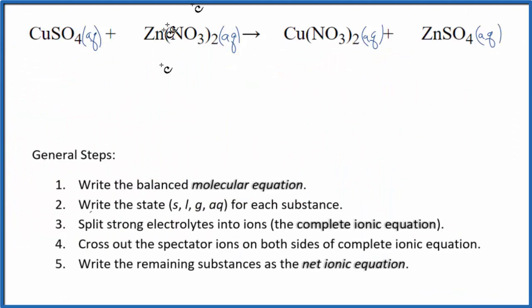So I can split this up into its ions. I'll have Cu, and that'll be copper 2+. I won't write the states in right now. SO4, the sulfate, that's 2-. Zinc is always 2+. And then we have 2 nitrate ions. So those would be our reactants.